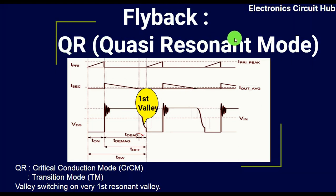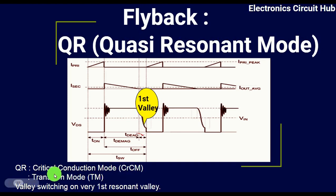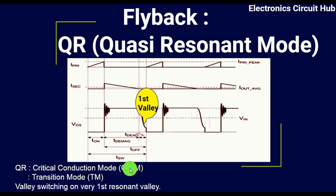QR stands for quasi resonant mode of flyback converter, and it is a type of discontinuous conduction mode. It is sometimes called critical conduction mode, or CRCM. It is also called transition mode, abbreviated TM. So it has multiple names: critical conduction mode and transition mode.